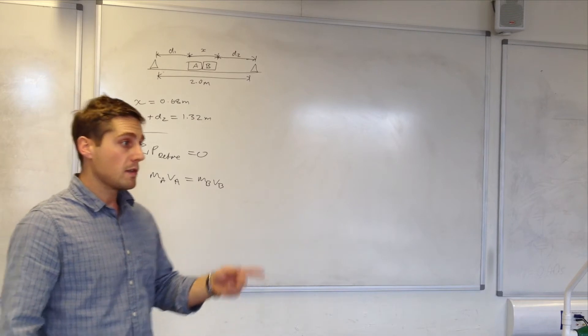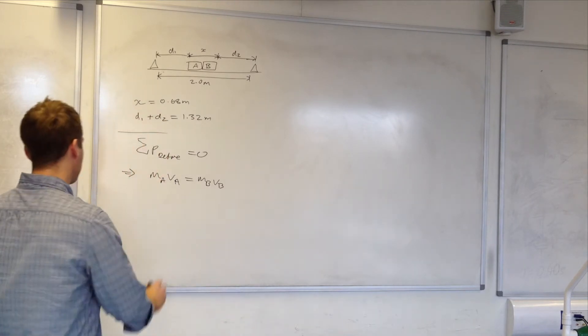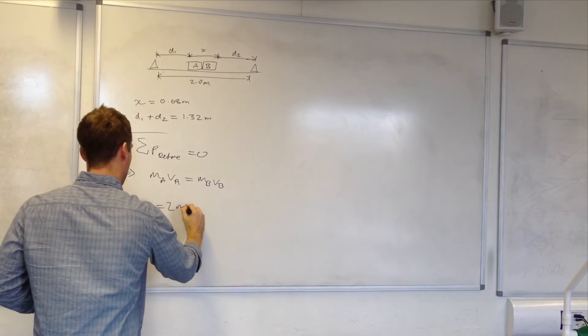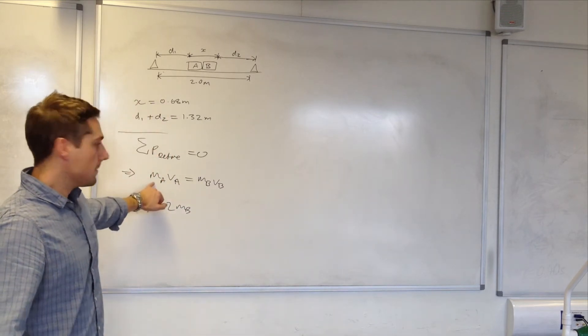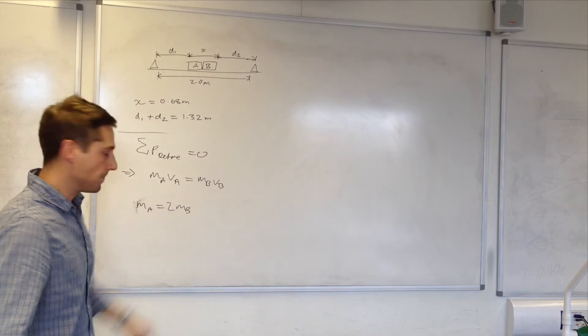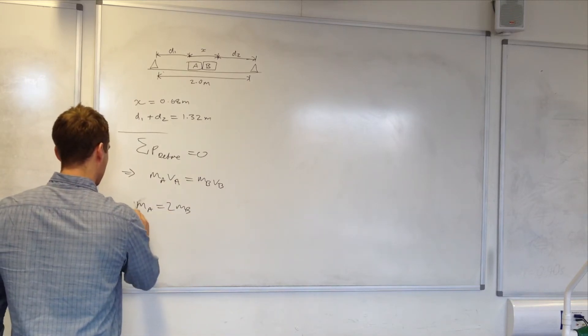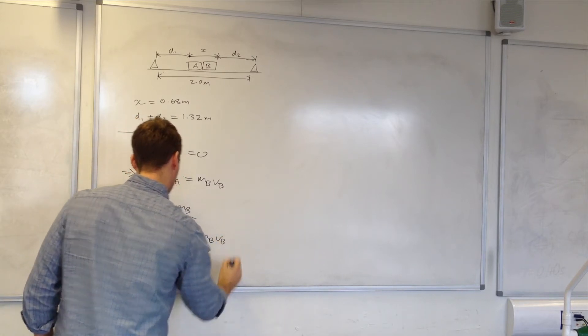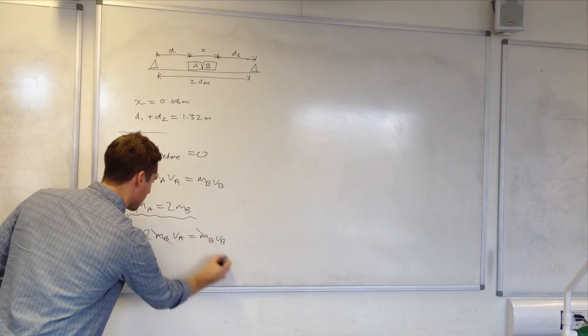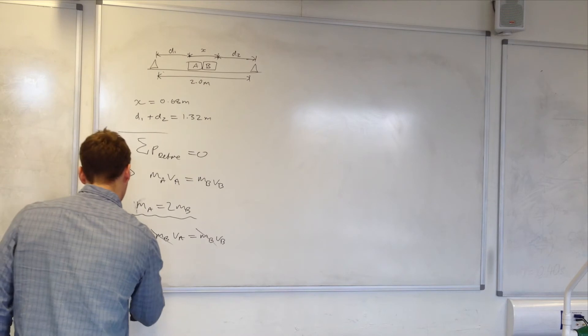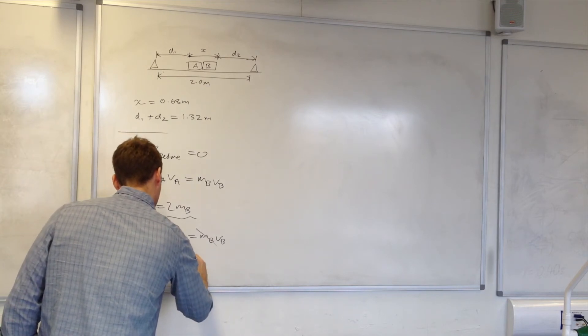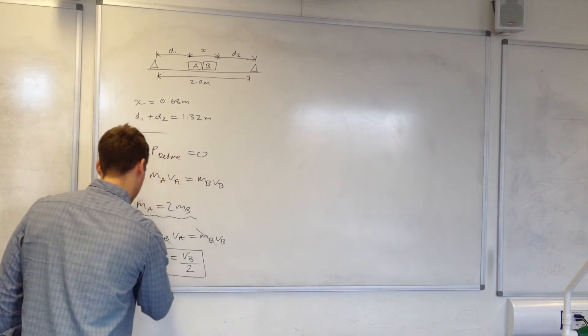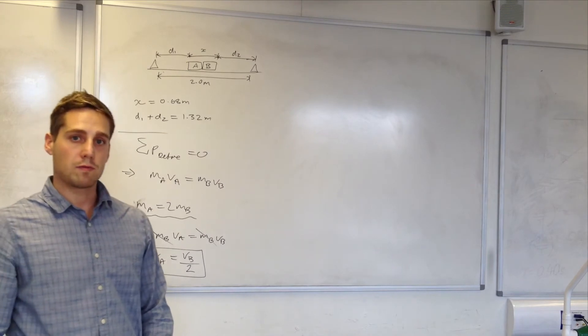What I'll do now is use the fact that trolley A has double the mass of trolley B. I can substitute for MA in this equation using 2MB. The MB's will cancel. So 2VA equals VB, or VA equals VB divided by 2. So I have a relationship between the velocities now.